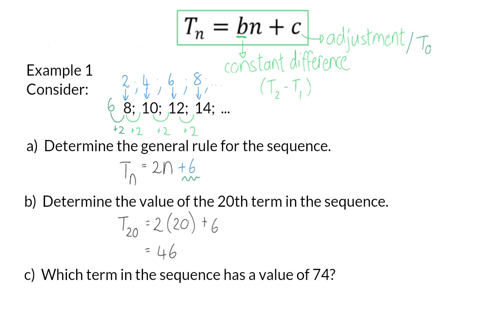Question c: Which term in the sequence has a value of 74? So, this time we are given the left-hand side of the general rule, the value, and we are asked to determine the position.